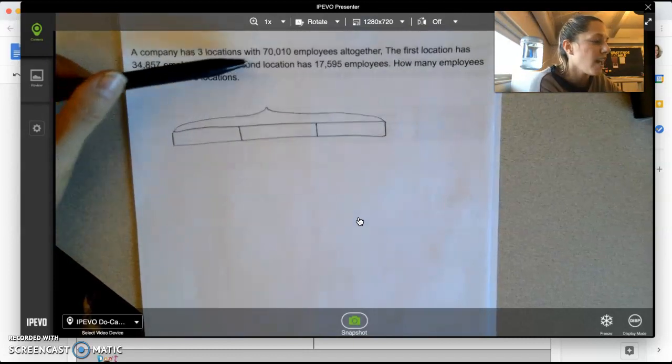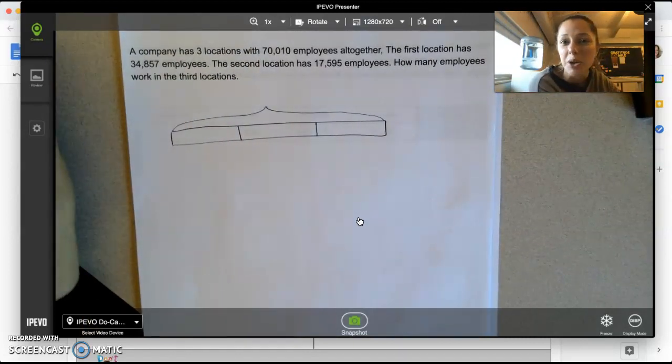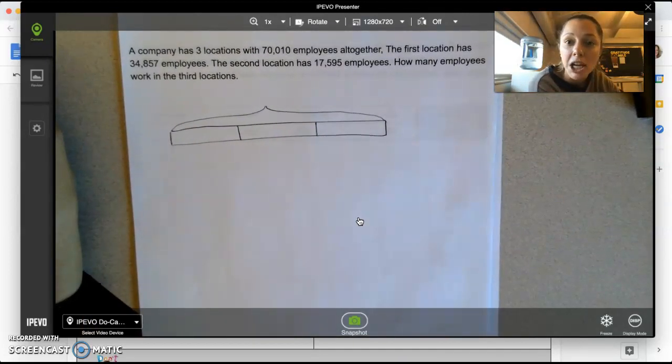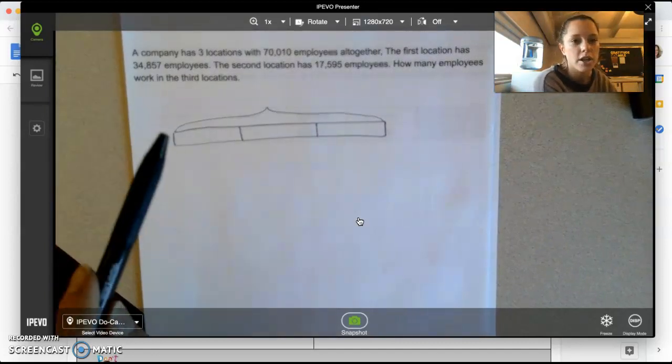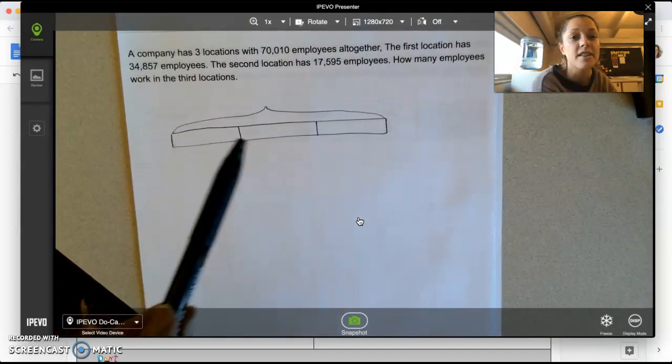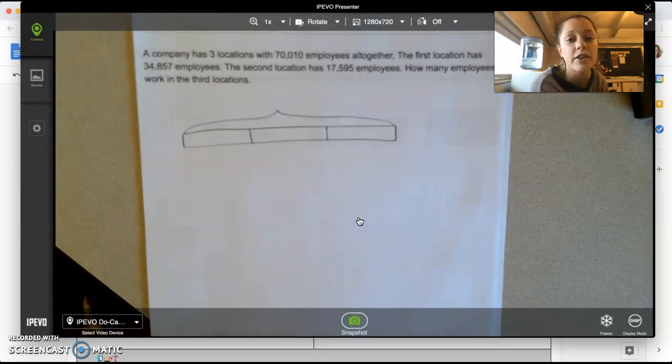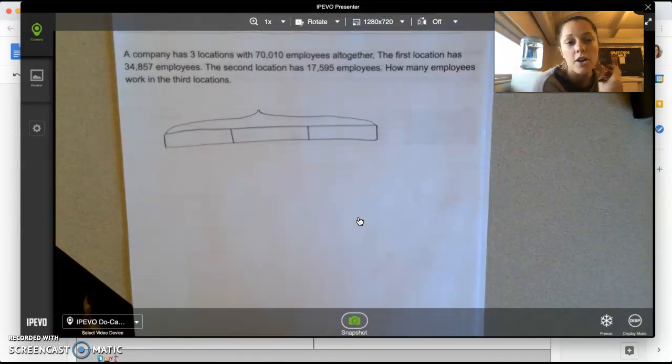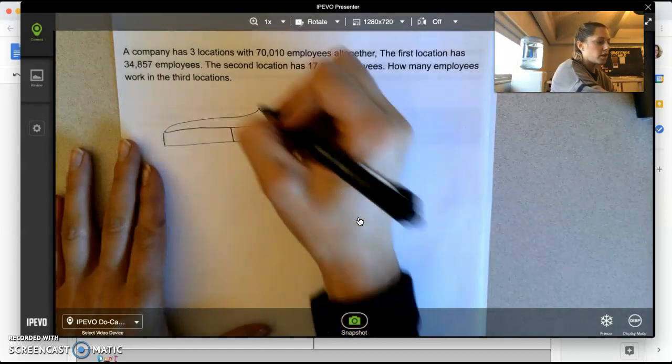They have 70,010 employees altogether. So many. The first location has 34,857 employees. The second location has 17,595 employees. And our question is, how many employees work in the third location?